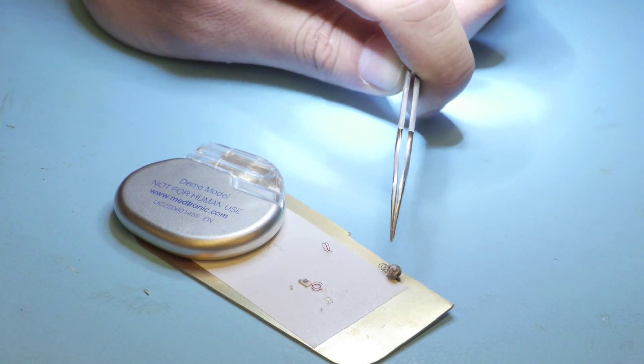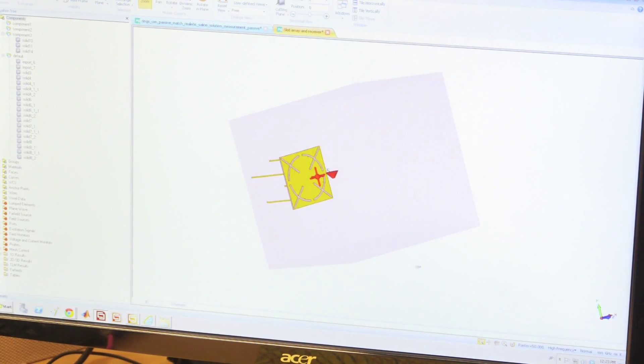With this power transfer method, we can miniaturize the last thing that makes medical devices so large, which is the battery, and make it about the size of a grain of rice. We can power it nearly anywhere in the body, including the heart or the brain.